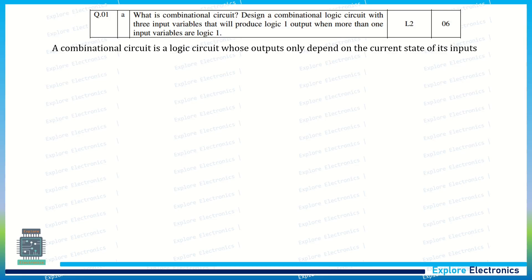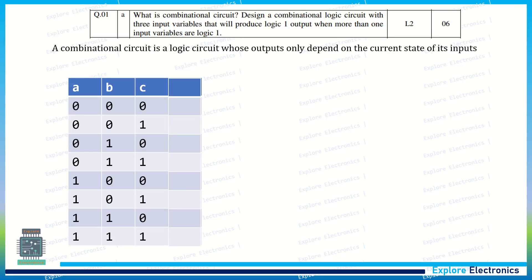A combinational circuit is a logic circuit whose output will depend only on the current state of its inputs. It will not depend on the previous outputs or any other previous conditions. The output will be generated depending on the present state of inputs.